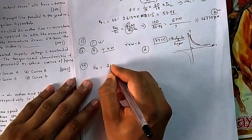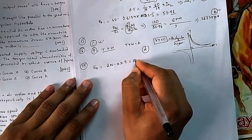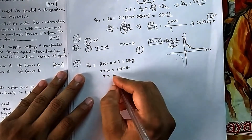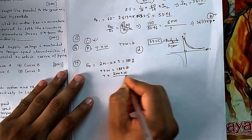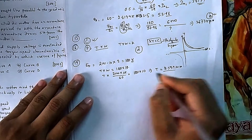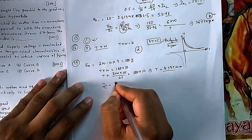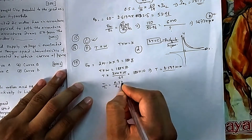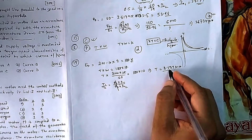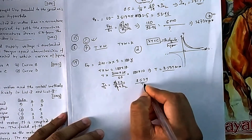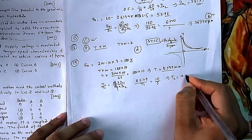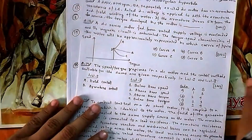Calculating back-EMF at rated 10 ampere: Eb = 200 minus 10 times 2 = 180 volts. Then torque times omega equals 180 times 10, and with speed 2000 RPM converted to rad/s (2000 × 2π / 60), torque T = 8.594 N·m at 10 A. Since torque is directly proportional to Ia, and the current is 5 A (half of 10 A), the torque at 5 A is T2 = 4.297 N·m.